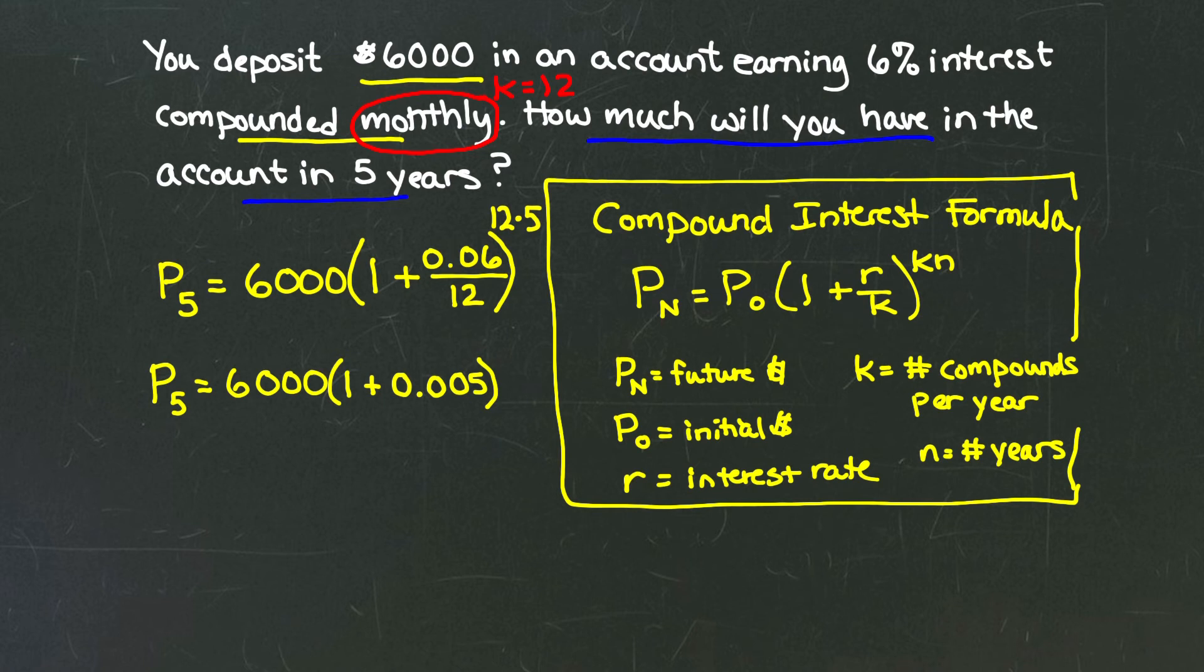...up in my exponent, 12 times 5 is just 60. So let me go down one more step of simplification here. That tells me that the amount in my account after five years is 6,000 times the quantity—hang on a second. Let's write this together. 1 plus 0.005 is 1.005 raised to the 60th power.